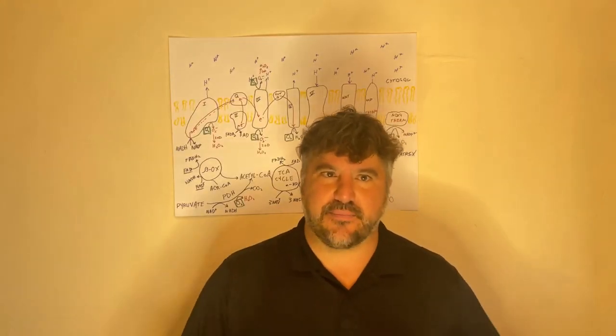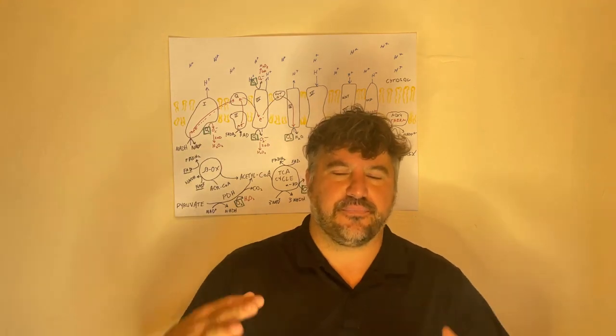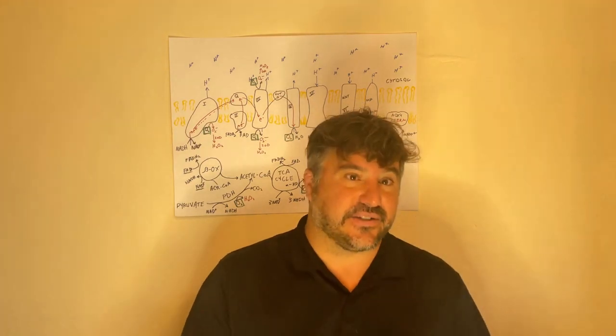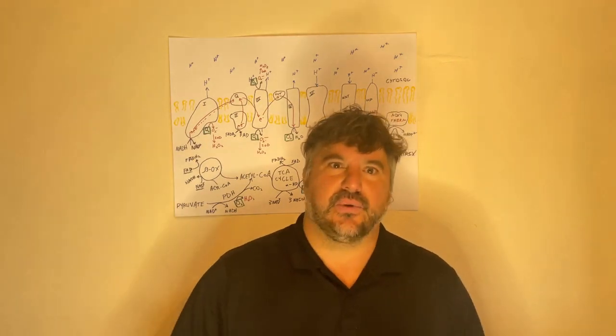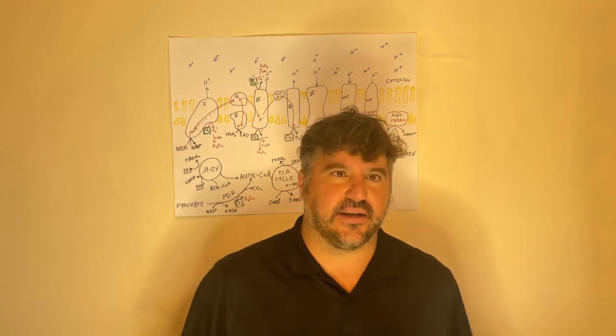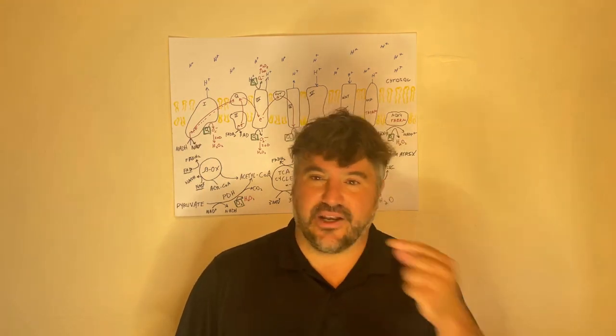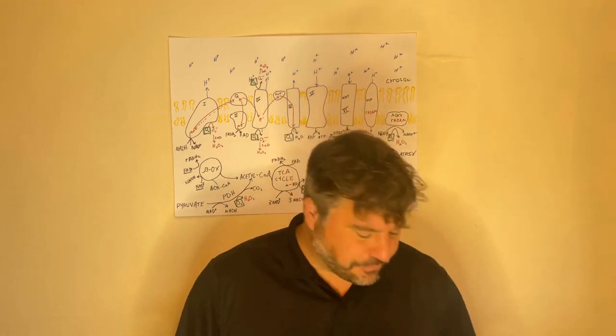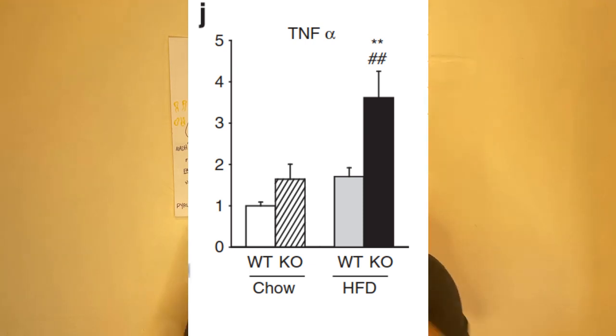But it also increases your ability to burn fat by stimulating AMP kinase or turning on AMP kinase. So leptin is both lowering your levels of hunger and increasing your metabolic rate. Mice who lack NOX4, mice who can't produce hydrogen peroxide in the mitochondria, they become leptin resistant and they also become insulin resistant.